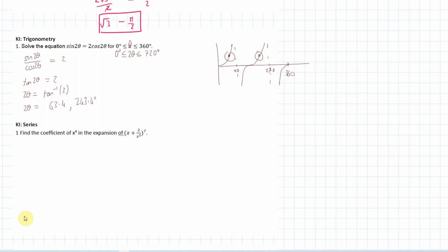Adding 180° (the period of tan) gives 423.4° and 603.4°. Dividing all four values by 2 to get θ: 31.7°, 121.7°, 211.7°, and 301.7°. Don't round until the end.